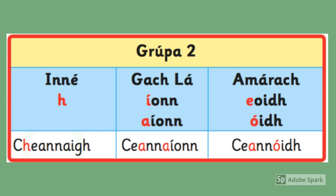OK, so here are our three tenses — our three briathra together. We have inné, yesterday, and our past tense is ceannaigh. Present tense: gach lá, every day, is ceannaiíonn. And then amárach is tomorrow, and it's ceannóidh. Say it with me boys: ceannaigh, ceannaiíonn, ceannóidh. Well done, boys.